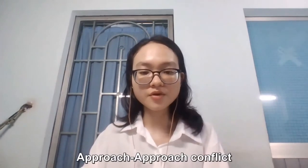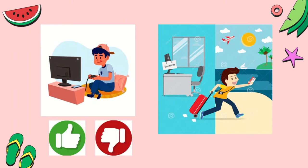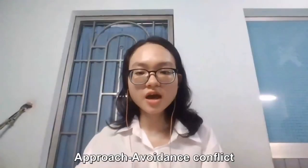Let's take an example of approach-approach conflict: a student must choose between staying at home on holiday to play games or going on vacation. When the consumer must choose between two products, whatever choice they make, they get the benefit of the product they choose and lose the benefit of the other. Marketers can give consumers additional reasons to convince themselves that their choice is smart.